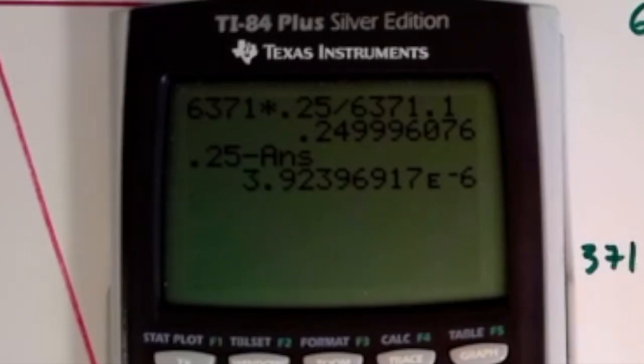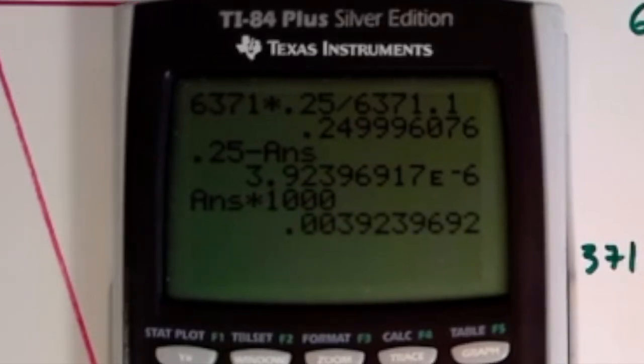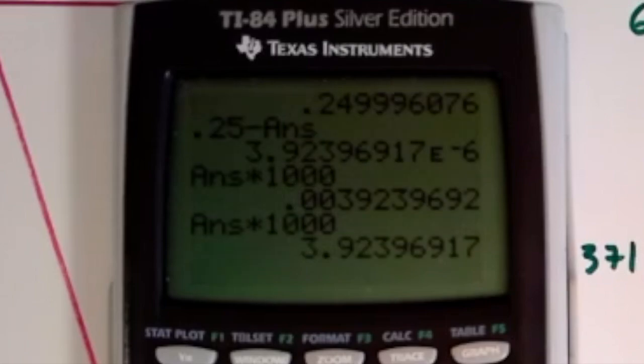Now this is in scientific notation and it's in kilometers. So to get a better sense, let's go ahead and multiply by a thousand to find how many meters it is. And then we can multiply by a thousand again to find out how many millimeters it is. So that's less than four millimeters.